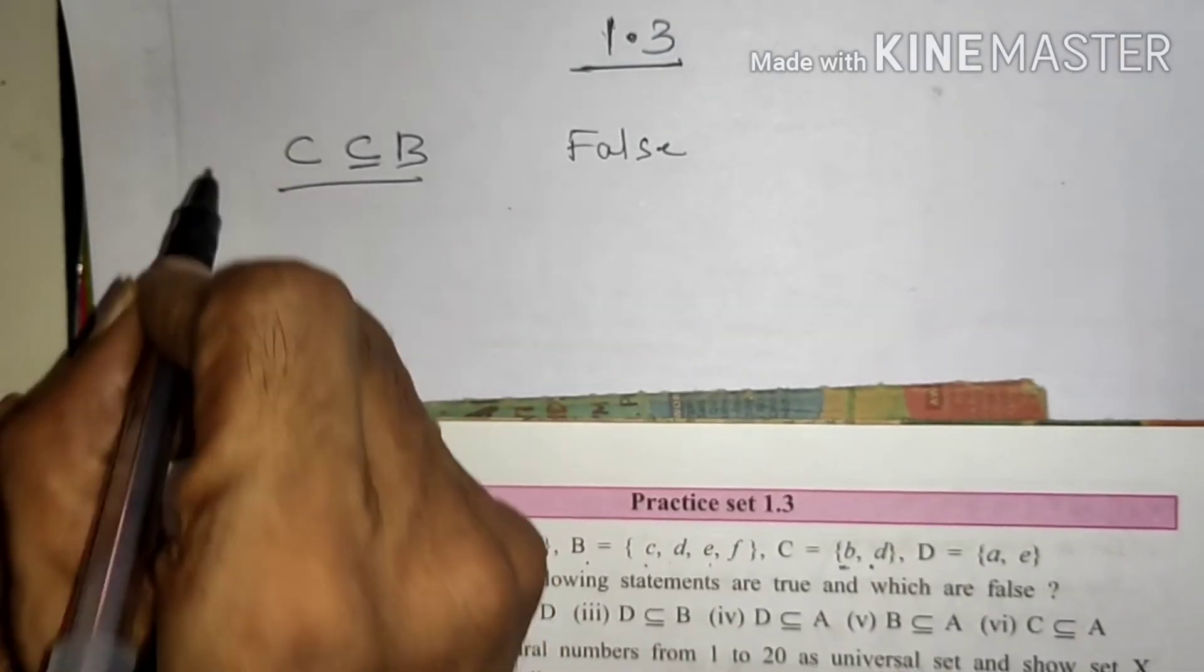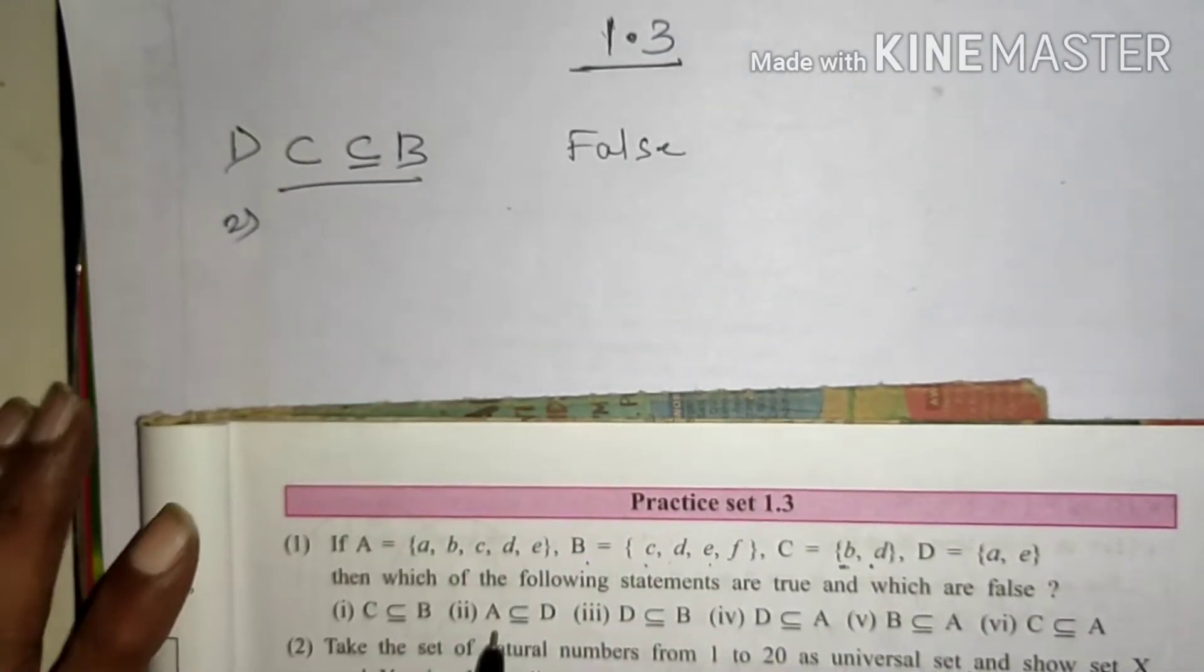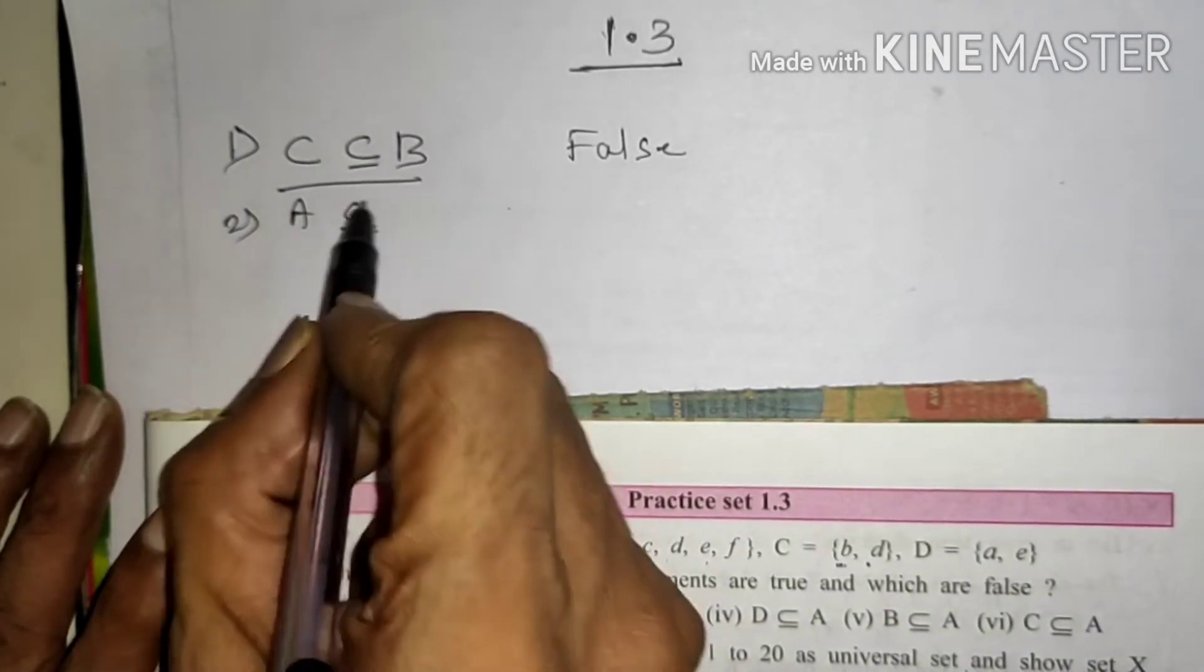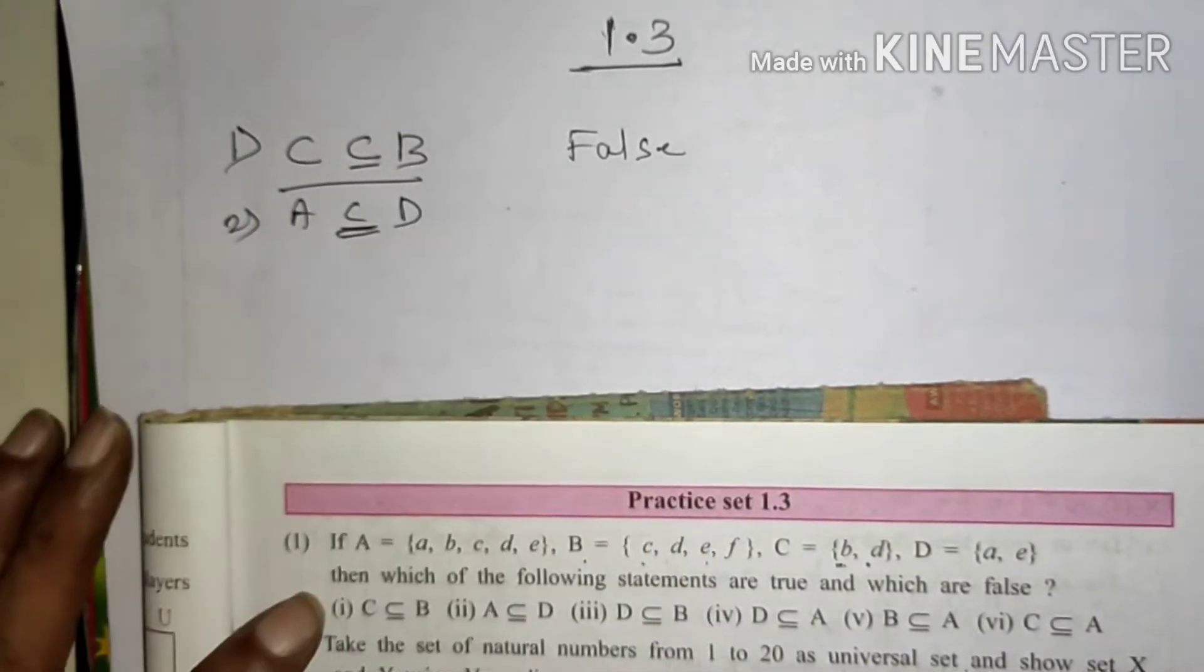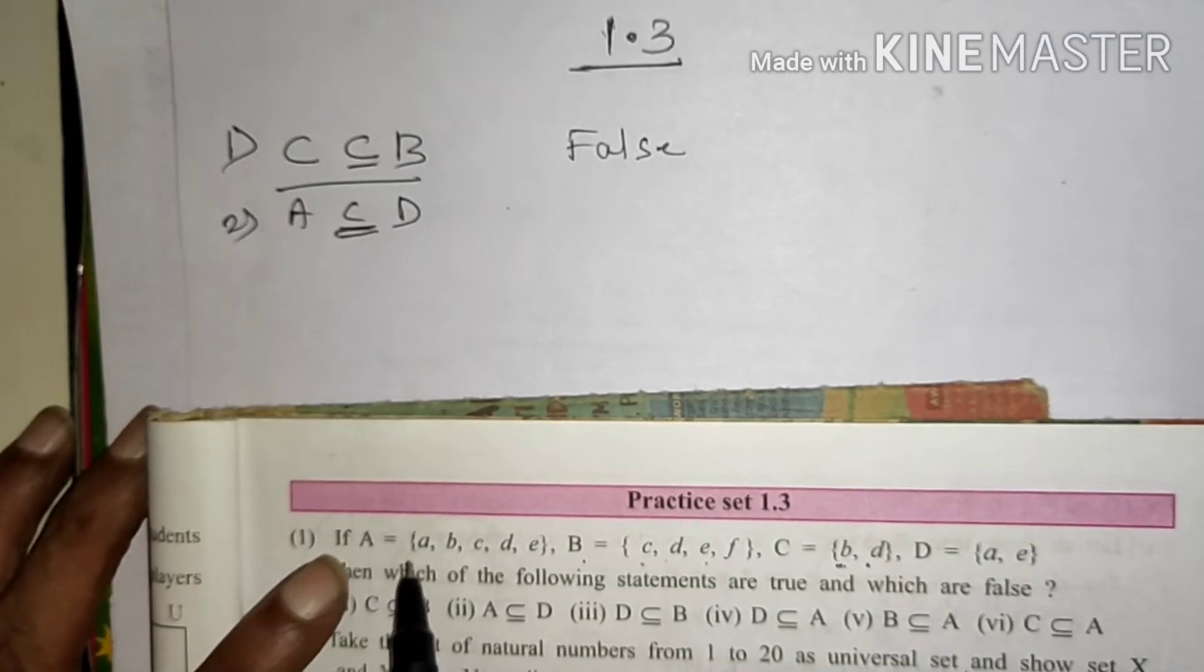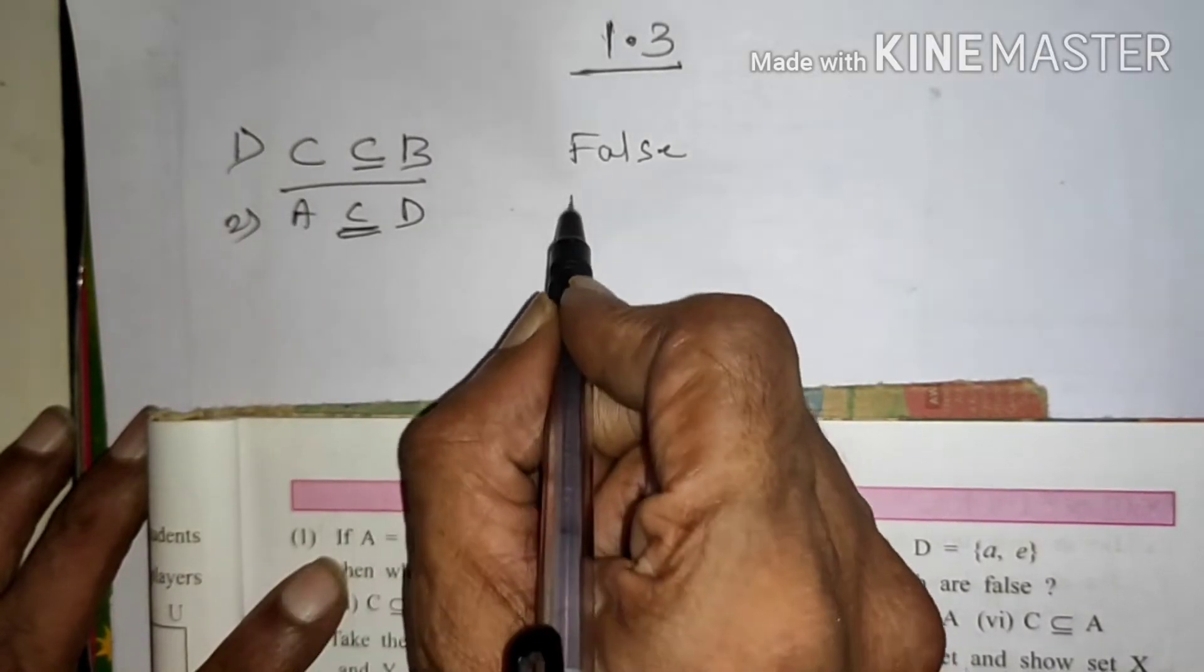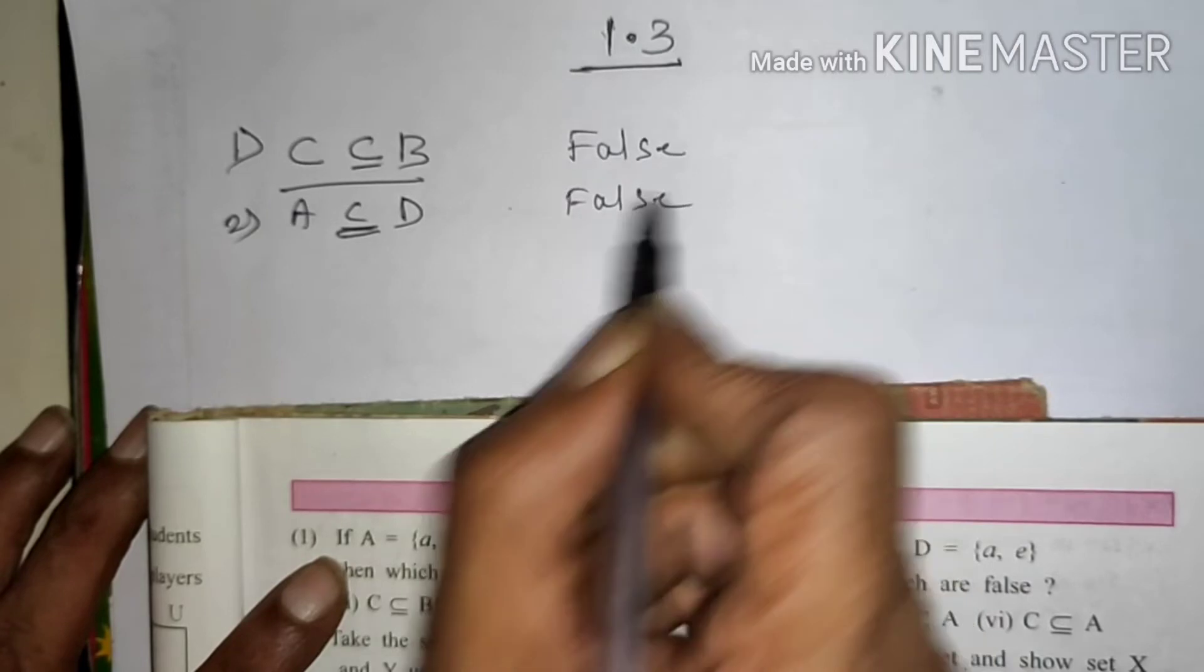Second one, A is subset of D. Now let's see here, A ke A, B, C, D, E hai, B. So it is also false.